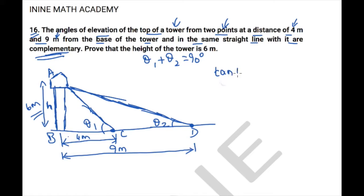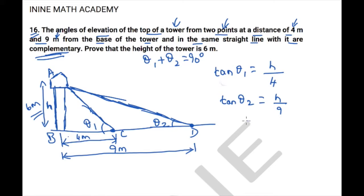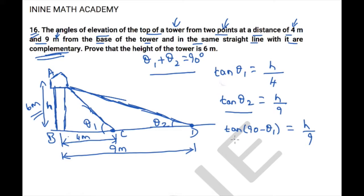tan(theta 1) = h / 4, that is opposite over adjacent. Similarly, from triangle ABD, tan(theta 2) = h / 9. However, theta 1 and theta 2 are complementary, so tan(theta 2) = tan(90 − theta 1) = cot(theta 1) = h / 9. So we have tan(theta 1) = h/4 and cot(theta 1) = h/9.